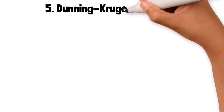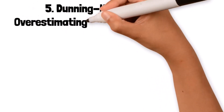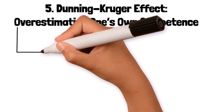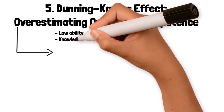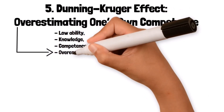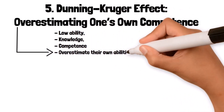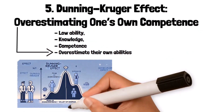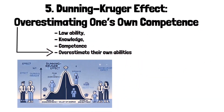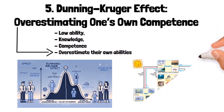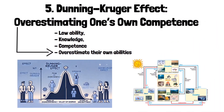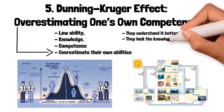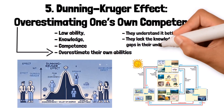5. Dunning-Kruger Effect: overestimating one's own competence. The Dunning-Kruger effect is a cognitive bias where people with low ability, knowledge, or competence in a particular area overestimate their own abilities. Conversely, people with high ability often underestimate their competence. For instance, someone with little understanding of a complex subject like climate science might believe they understand it better than experts, simply because they lack the knowledge to recognize the gaps in their understanding.